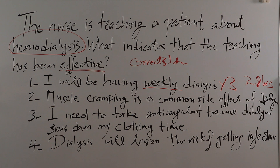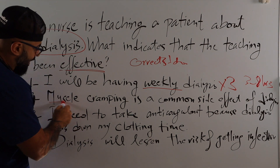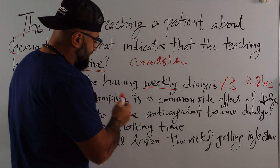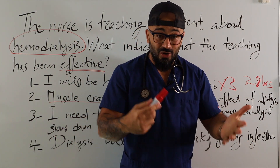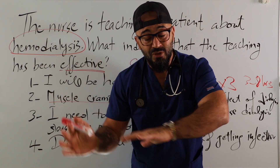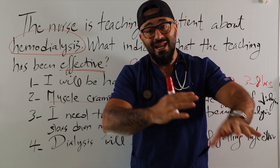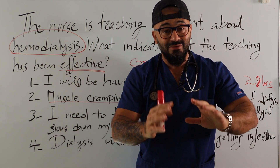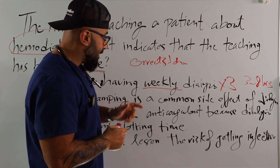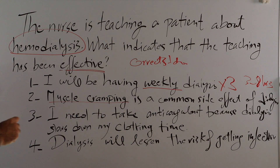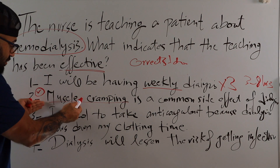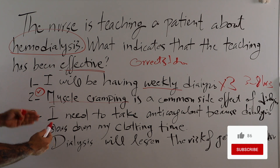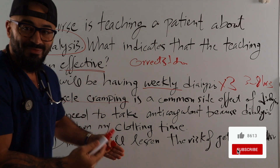Option number two: 'Muscle cramping is a common side effect of dialysis.' Muscle cramping is a keyword in this option. It's a true statement because patients on dialysis — because of all the waste that's being taken out, all the electrolytes — sometimes those patients experience muscle cramping. So this is a correct statement. Obviously this is the correct answer, but I'm going to read the other options in case there's something I'm missing.